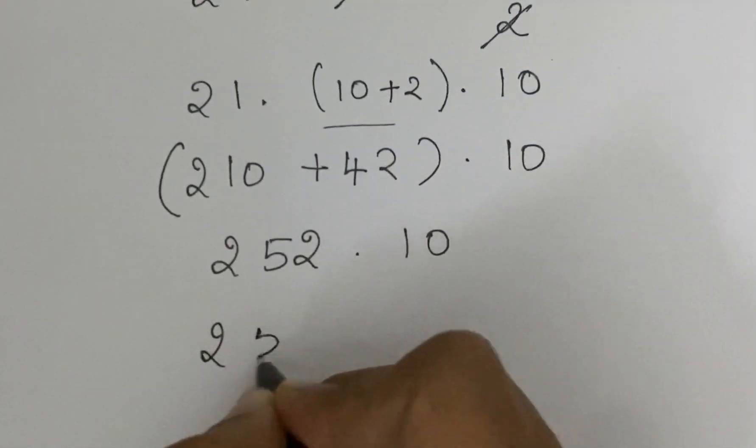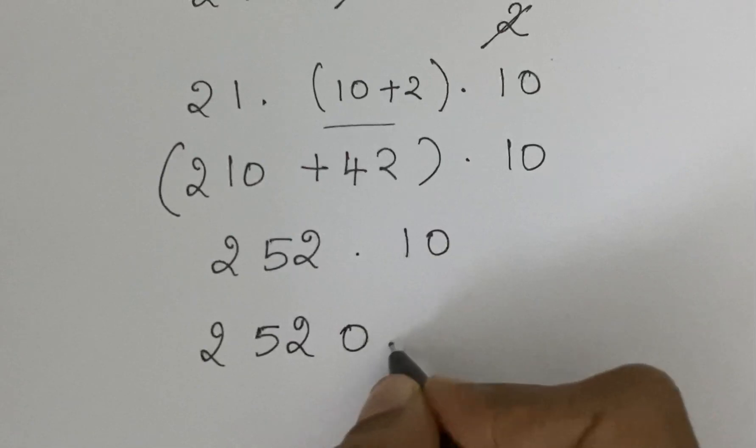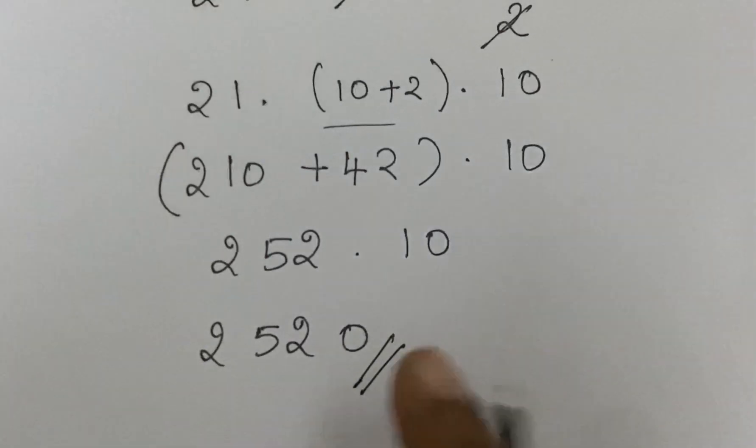If we multiply this, we get 2520. This is our solution for the given problem.